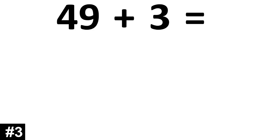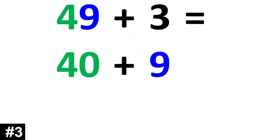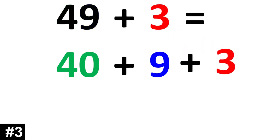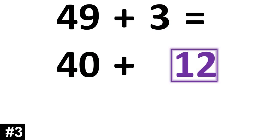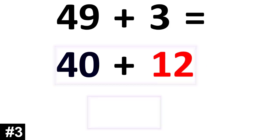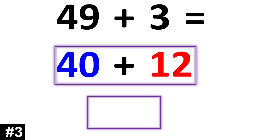49 plus 3. 49 is the same thing as 40 plus 9. So we add the other 3 and we have 9 plus 3, which gives us 12. And now we add the 12 to 40 and we have 52.